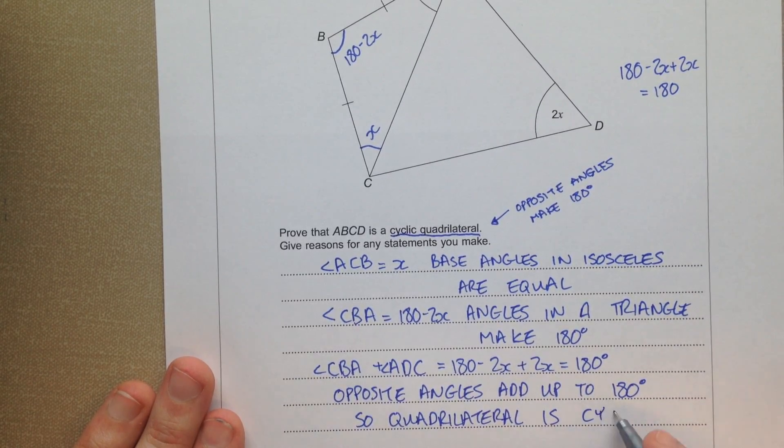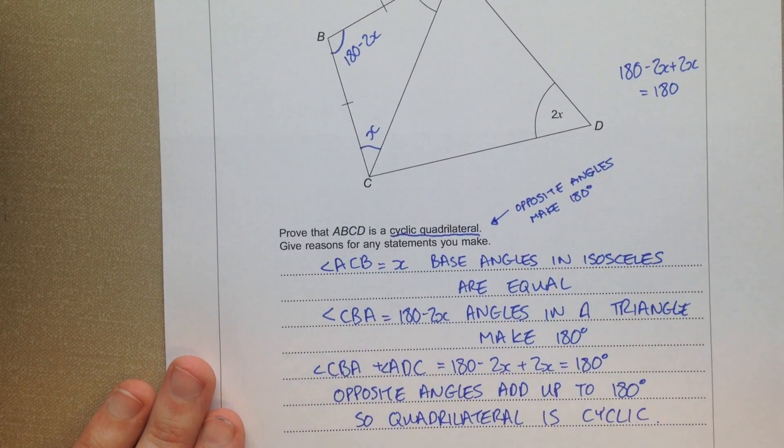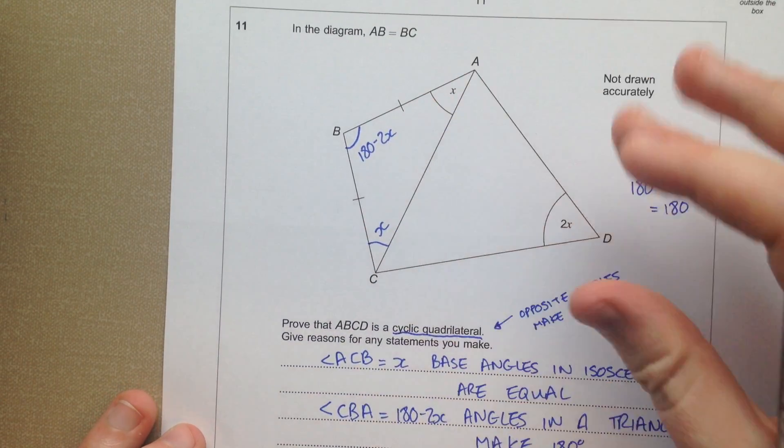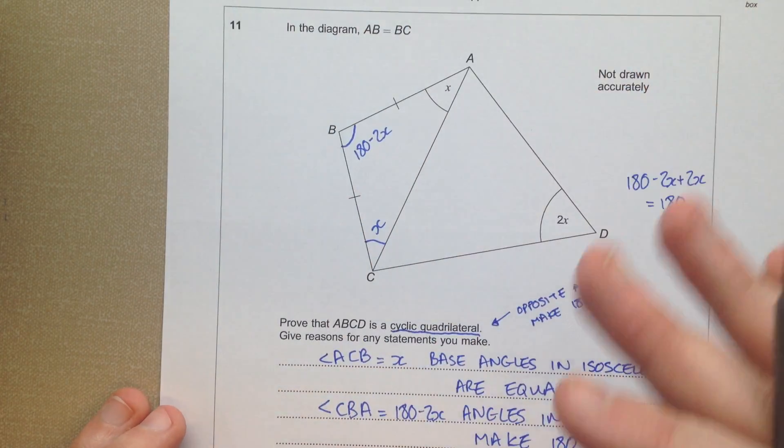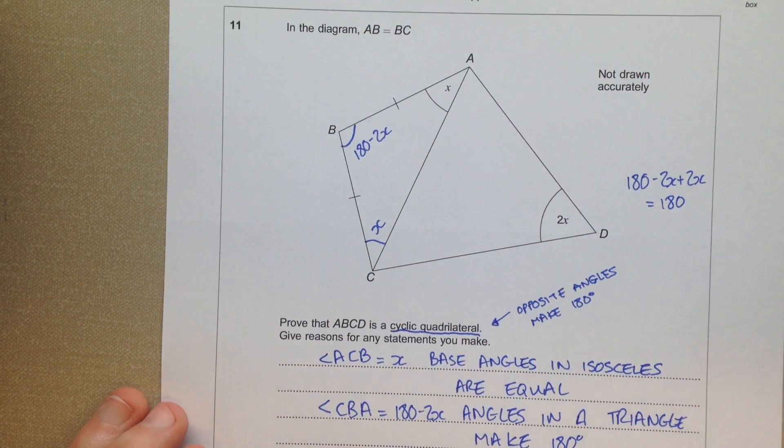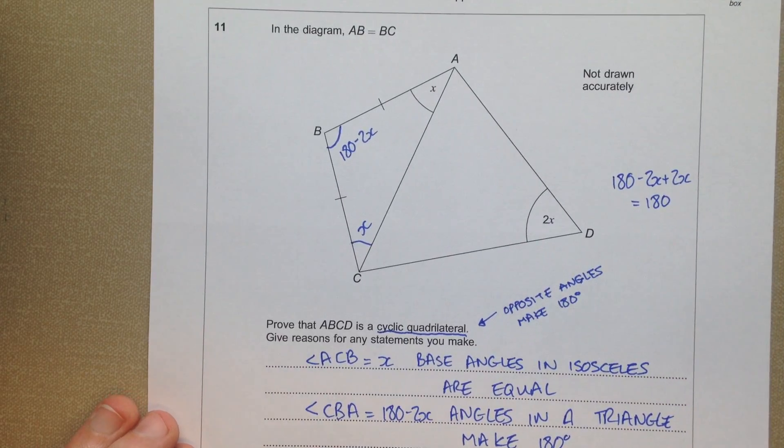Is cyclic. So I think the best approach to this is to go through on the diagram and figure out what angles you can. And then think about the steps you took in order to prove that. And then try and think of the official reasons.